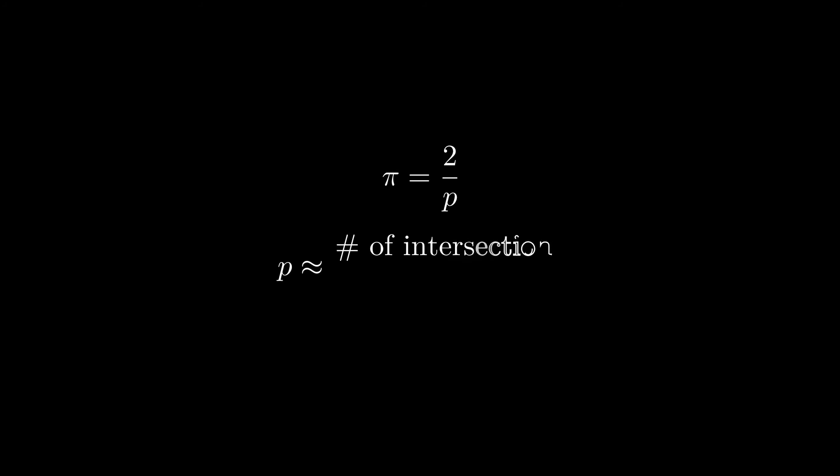Since p is approximated by the number of intersections over the number of drops, substituting them into the equation will indeed give us an approximation for pi.